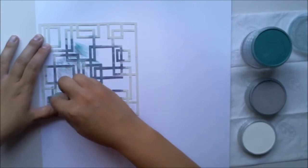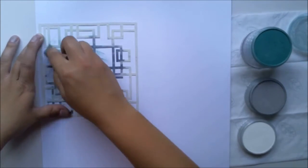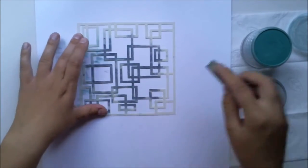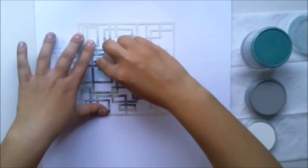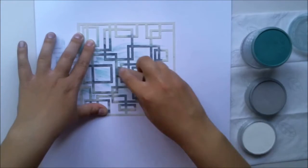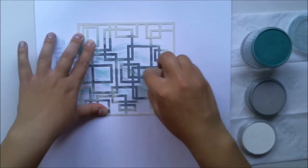I'm starting with the boxes stencil and three pan pastels: green, grey, and white. I'm just spreading those colors onto my white cardstock.